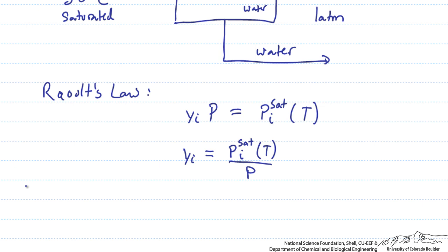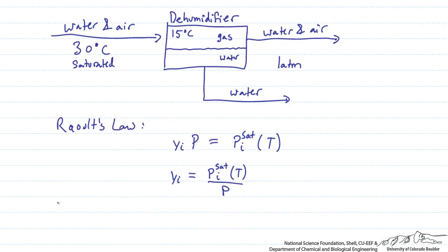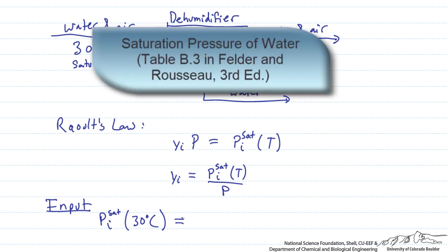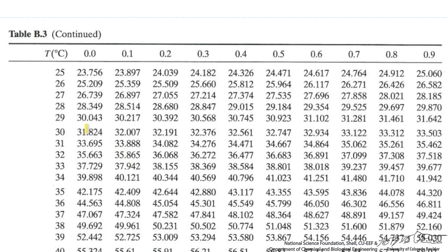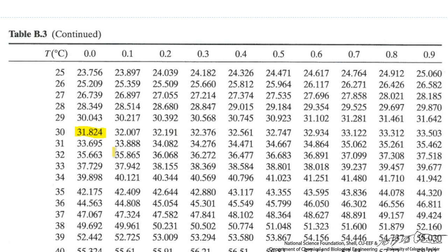Now we can find the composition coming into and out of the dehumidifier. First let's calculate the molar composition of the water in air coming in. To do this we need to look up the saturation pressure of water at 30 degrees C using table B3 from Felder and Rousseau, Elementary Principles of Chemical Processes, third edition. At 30 degrees with 0 in the decimal place, the saturation pressure of water is 31.824 millimeters of mercury.